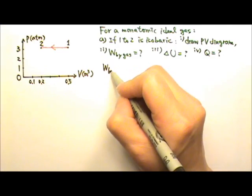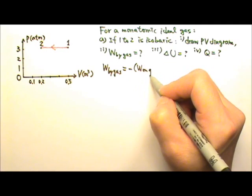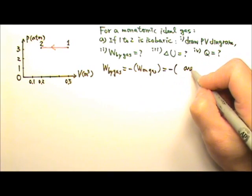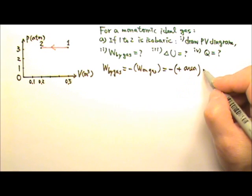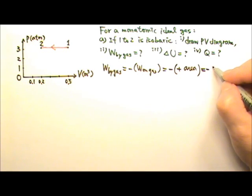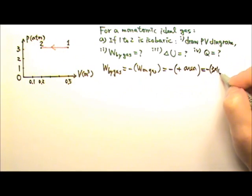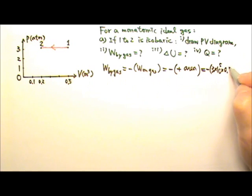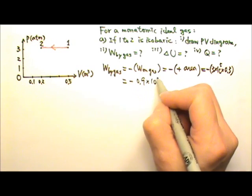Now let's find the work done by the gas. The work done by the gas is the negative of the work done on the gas. The work done on the gas equals the area under the curve, and because the volume decreases, it is a positive area, so the work done by the gas is negative. The height of the area is 3 atm, which is 3×10⁵ pascals, and the base is 0.3 cubic meters. So the work done by the gas is −0.9×10⁵ joules.